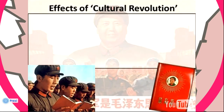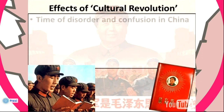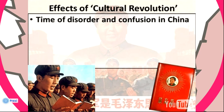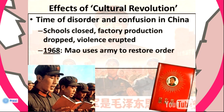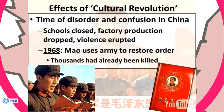As a result of the massive changes from the Cultural Revolution, China experienced disorder and confusion. Many schools closed, factory production dropped, and violence erupted. Eventually in 1968, Mao used the army to restore order in China. But by that point, thousands had already been killed and millions of people's lives had been drastically altered as a result of the Cultural Revolution.